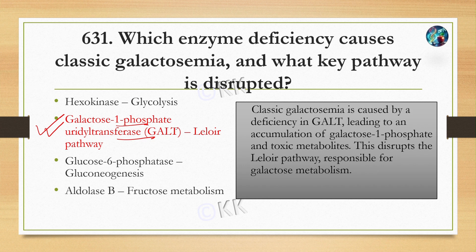The correct answer is option B: galactose-1-phosphate uridyl transferase in the Leloir pathway. Classic galactosemia is caused by deficiency of galactose-1-phosphate uridyl transferase. Due to this deficiency, galactose-1-phosphate accumulates, disrupting the main galactose metabolism pathway.